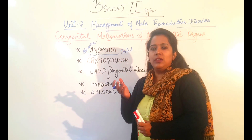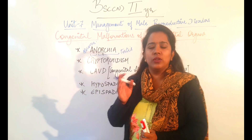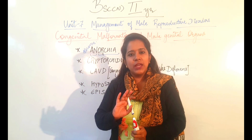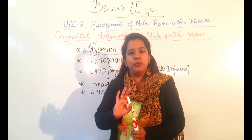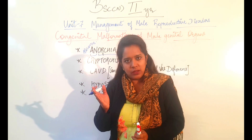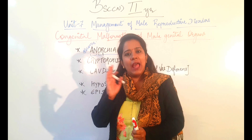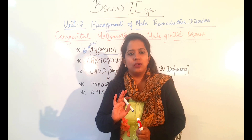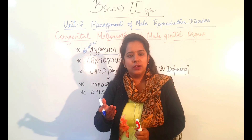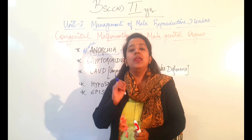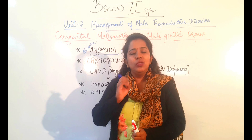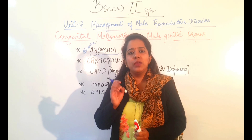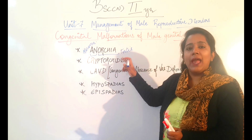This is a very less common condition. Normally, a boy child who is born with a penis will have two testes in the scrotum — that is the normal condition. If both testes are absent, then we say that is Anorchia.